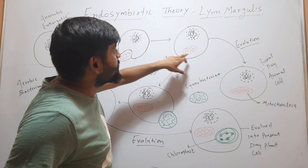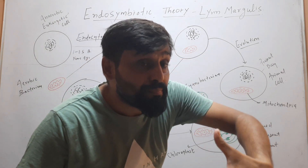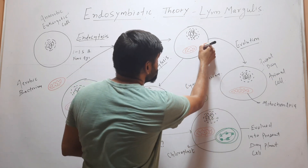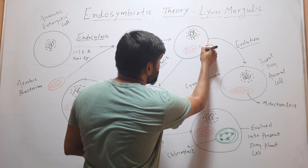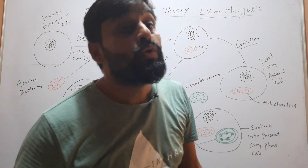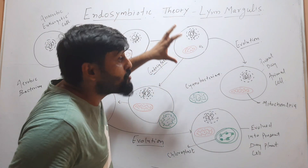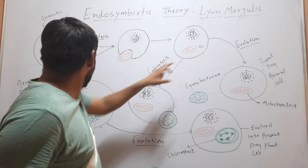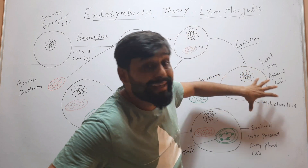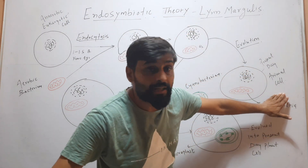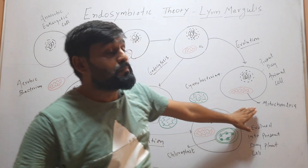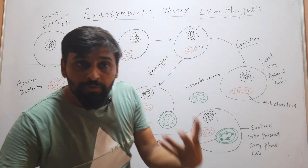This cell engulfed the bacterium, and the bacterium became part of that cell. Now this bacterium is respiring in the presence of oxygen, meaning food in this cell is completely broken down into energy, so the cell is now getting more energy. Over time, this aerobic bacterium evolved into mitochondria, and this cell ultimately evolved into present-day animal cells.